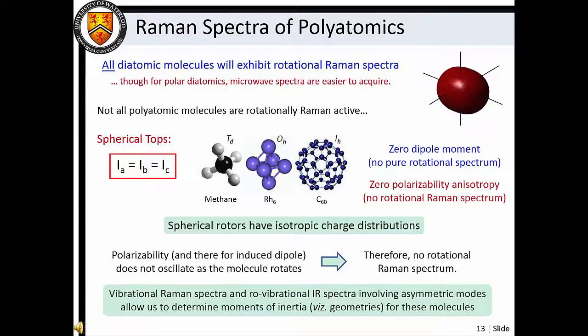As a consequence of their anisotropic polarizabilities, all diatomic molecules are rotationally Raman active, but this is not true of all polyatomic molecules. Spherical top species, such as methane, have isotropic charge distributions and therefore zero polarizability anisotropy, so they don't exhibit rotational Raman spectrum. Moreover, spherical tops have zero dipole moment and do not exhibit a microwave spectrum.